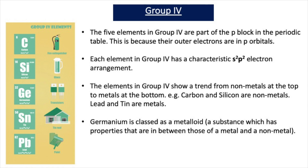In our previous video we looked at group 4 elements, their structure and bonding. The five elements in group 4 are part of the p block in the periodic table because their outer electrons are in p orbitals, and each element in group 4 has a characteristic S2p2 electron arrangement. The elements in group 4 show a trend from non-metals at the top to metals at the bottom: carbon and silicon are non-metals, lead and tin are metals, and germanium is classed as a metalloid. In this video we're going to look at the oxidation states of group 4, how their stability changes down the group, and the role of lead 4 compounds and tin 2 compounds as oxidizing and reducing agents respectively.